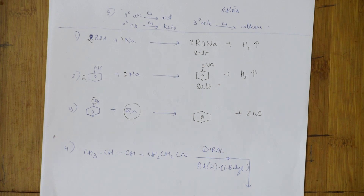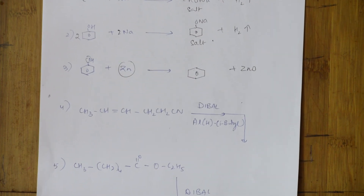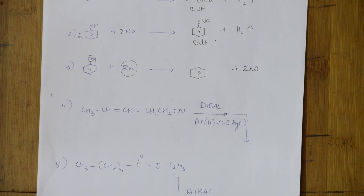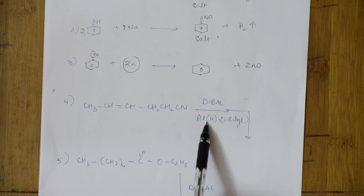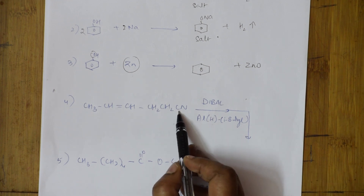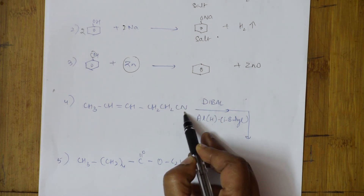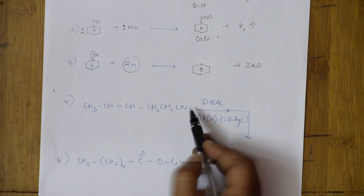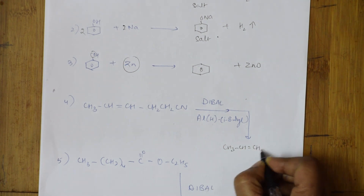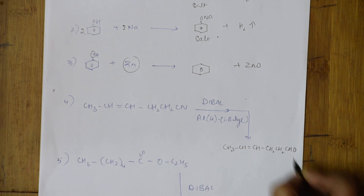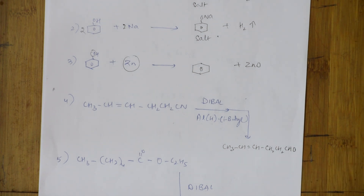Now DIBAL is very important. It reduces amides, aldehydes, ketones, nitriles, and esters. When you have a nitrile (CN group), DIBAL — di-isobutyl aluminum hydride, a reducing agent — converts the terminal group into an aldehyde. So CH₃CH=CHCH₂CH₂CH₂CHO is what DIBAL produces from a nitrile.